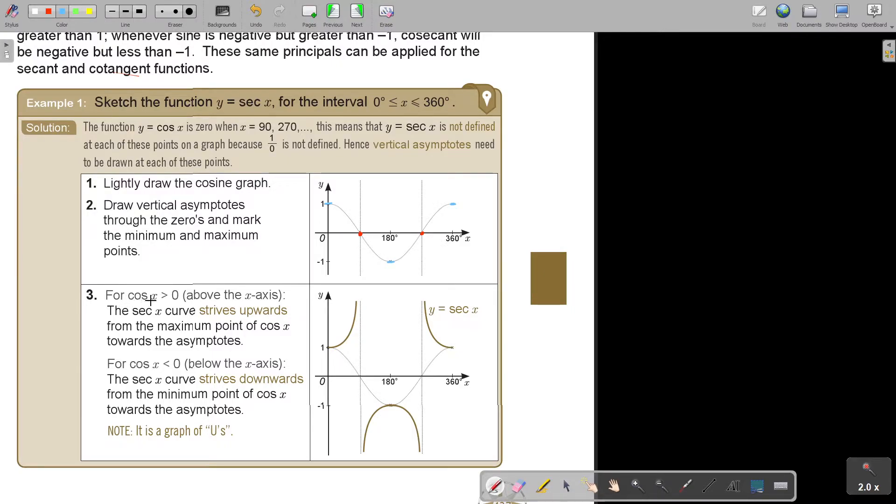For cos x bigger than 0, that means above the x-axis, the sec curve strives upwards from the maximum point of cos towards the asymptote. So it goes up towards the asymptote. Those are the two that you can draw now. For it's smaller than 0, below the x-axis, the sec curve strives downwards from the minimum point towards the asymptote. So it goes to this side and it goes to this side.